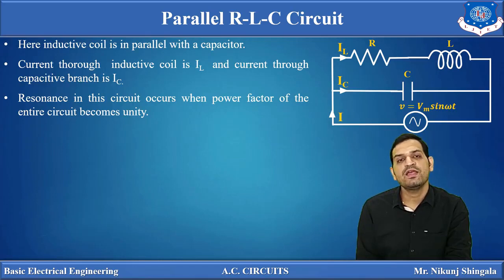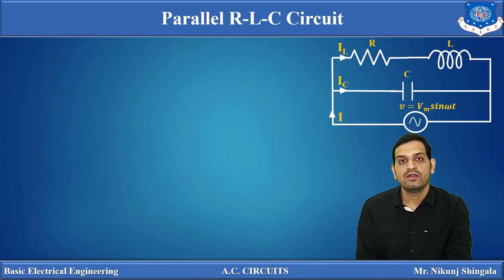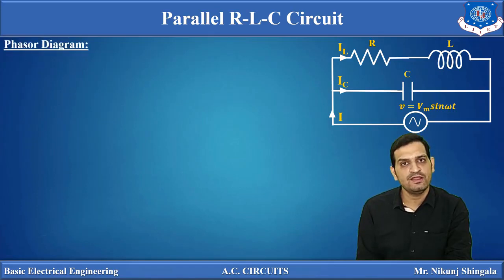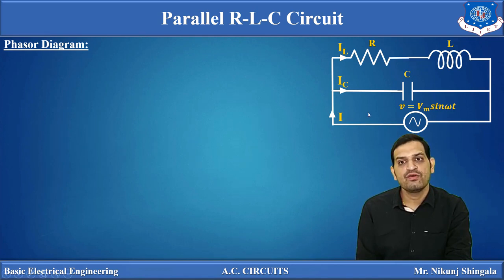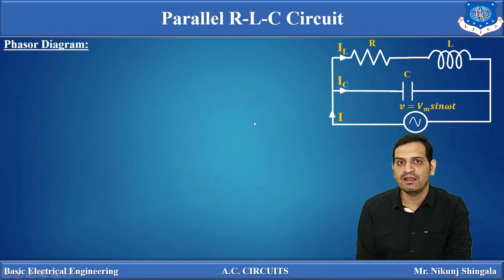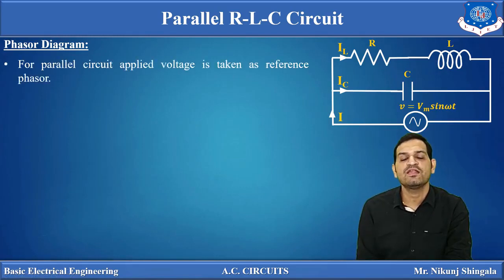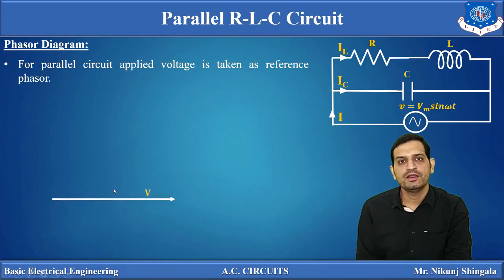Moving towards the phasor diagram of this circuit. To draw the phasor diagram, we have to take one quantity as a reference. This circuit consists of parallel branches, so voltage will be equal across both branches. In this parallel RLC circuit, voltage will be taken as the reference to draw the phasor diagram. Here you can see V is drawn in this particular direction — it is taken as the reference phasor.